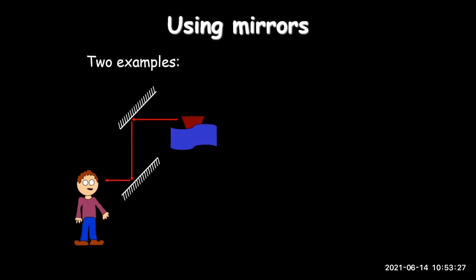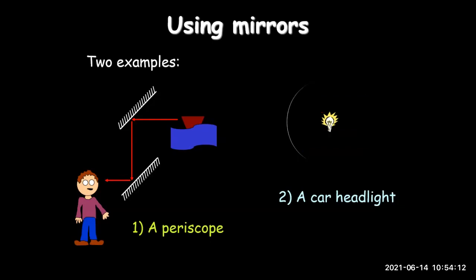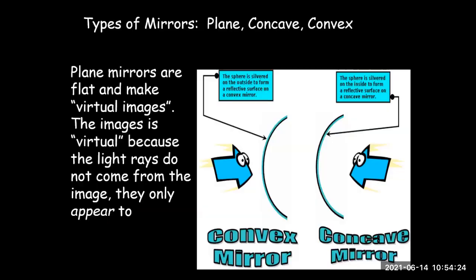The second example using mirrors is car headlights. Car headlights give a large amount of light because there is a mirror behind the lamp. Light coming out from the bulb is reflected by the mirror, producing a huge amount of light directed straight ahead.